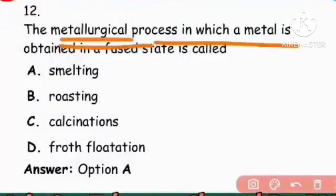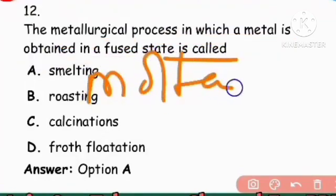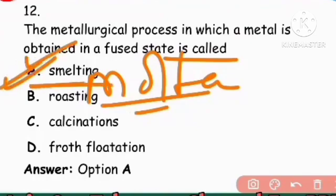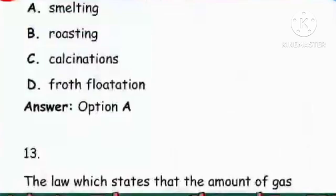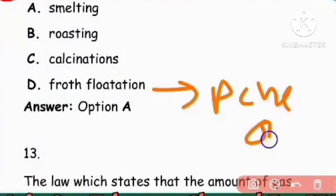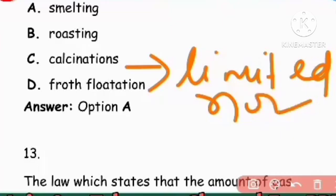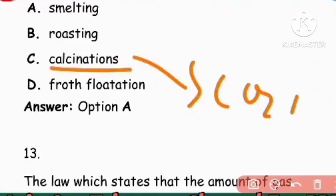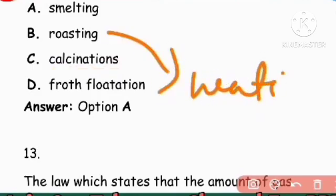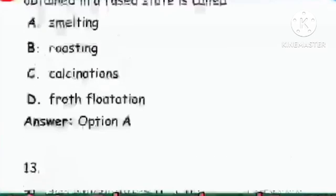Next question: The metal obtained in a fused/molten state is called smelting. For carbonate ore or oxide ore, calcination and roasting are used — heating of ore in excess supply of air. For sulphide ore, roasting is used. Right answer is option A: smelting.